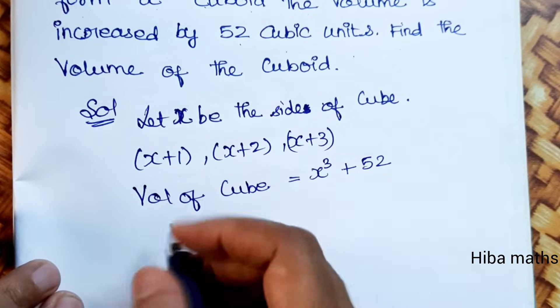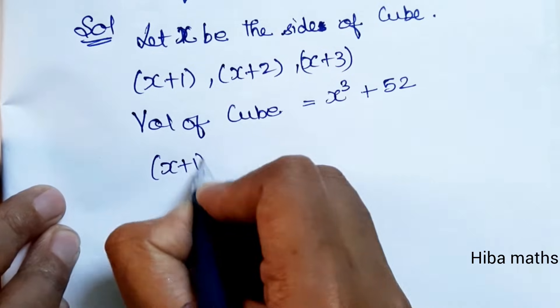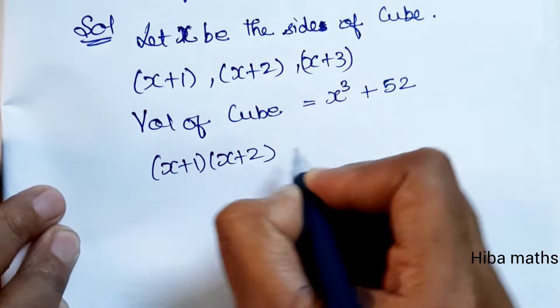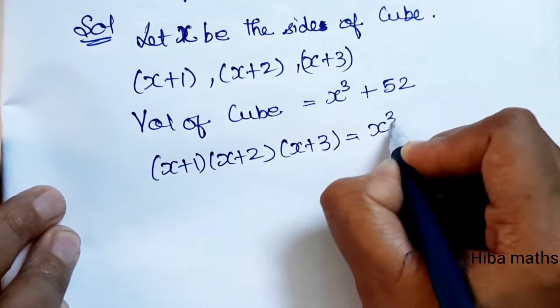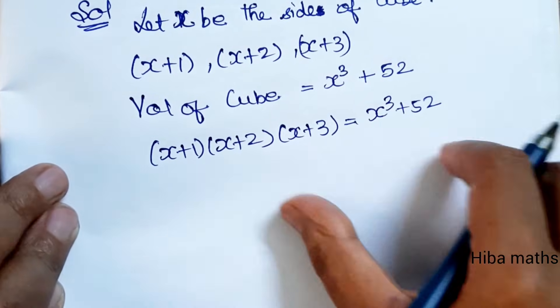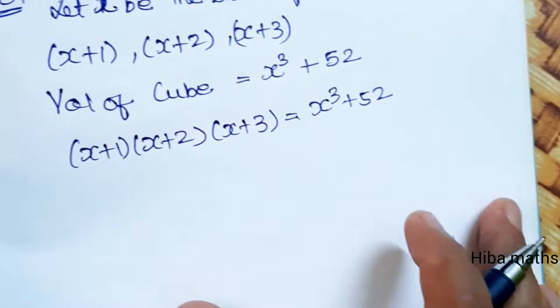Now we have to equalize these two, so we need x cubed equals x plus 1 times x plus 2 times x plus 3 minus 52.